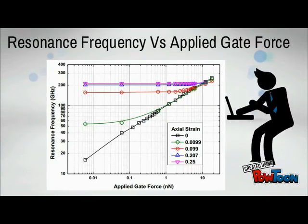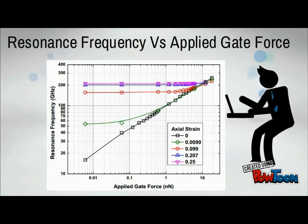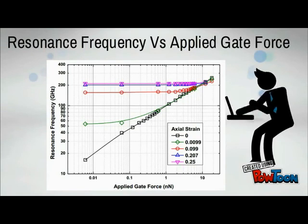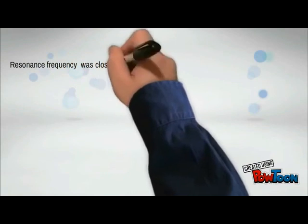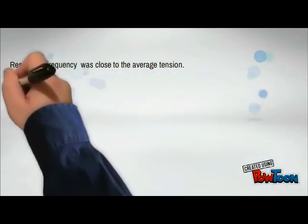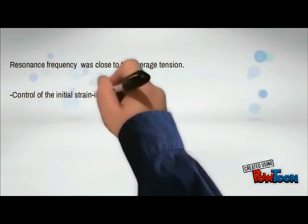Resonance frequency versus applied voltage. This graph shows the resonance frequency as a function of the applied gate force for different initial strains. From the graph, we can see that as the initial strain increases, the relation between the applied gate force and the resonance frequency changes, as their correlation decreases with the increase in initial strain.